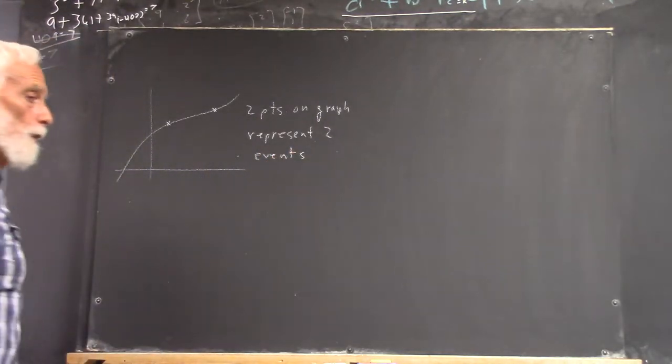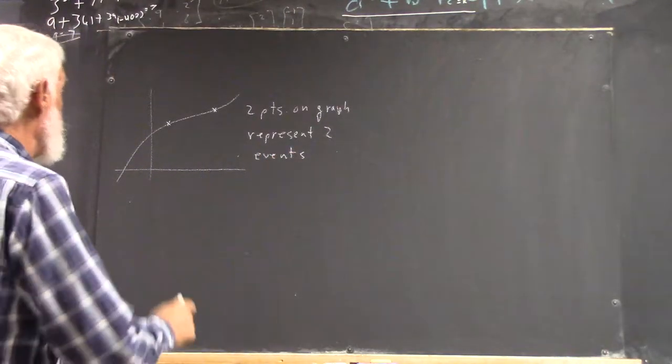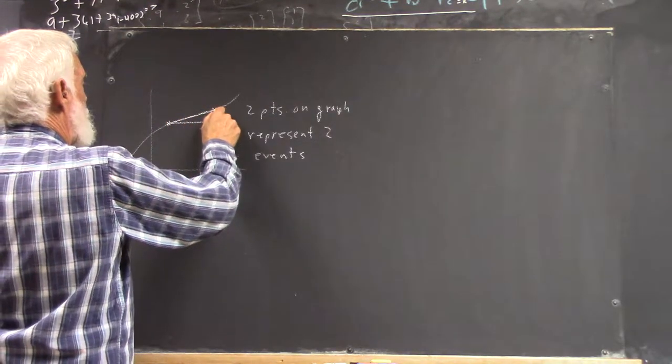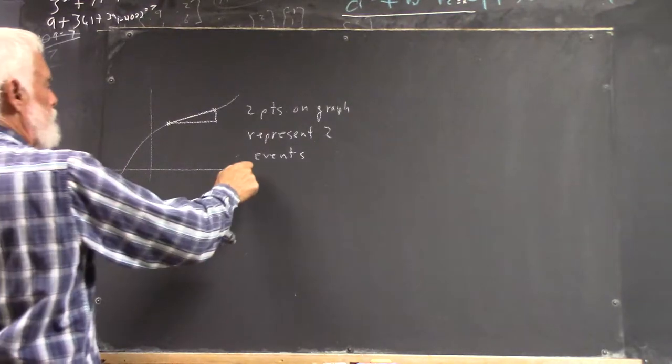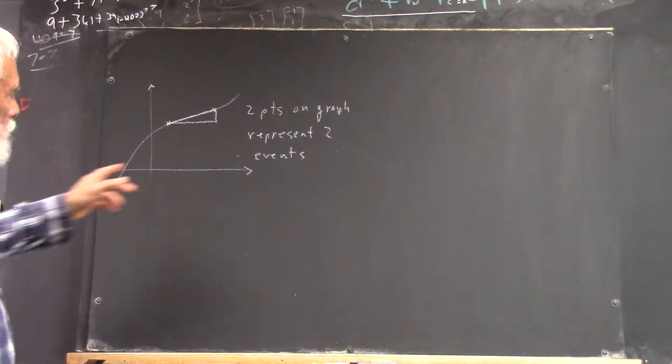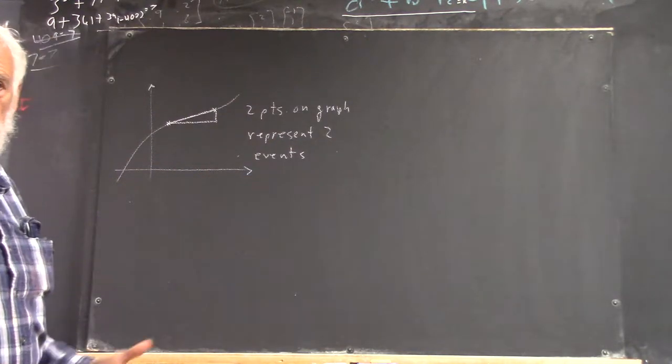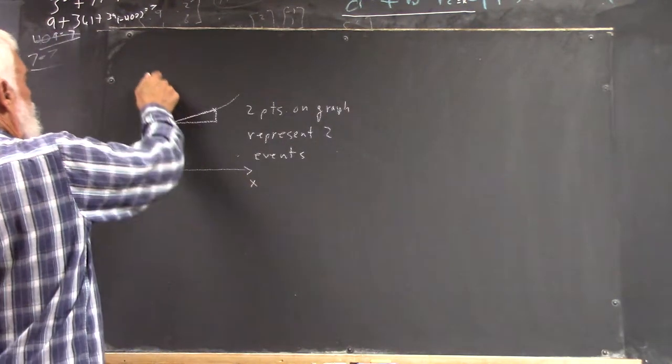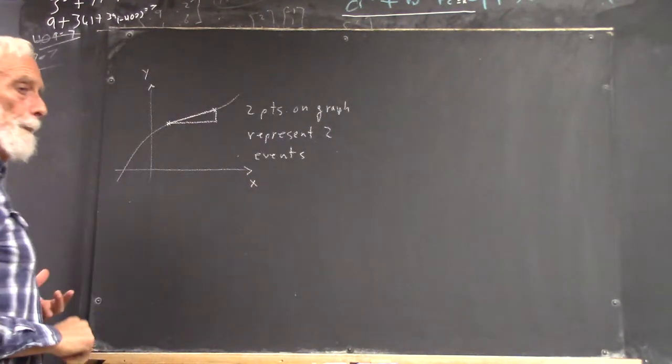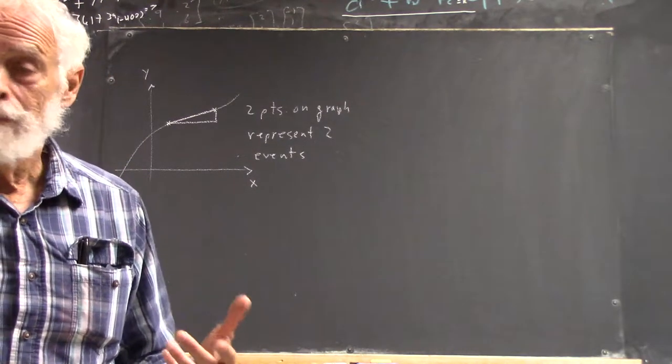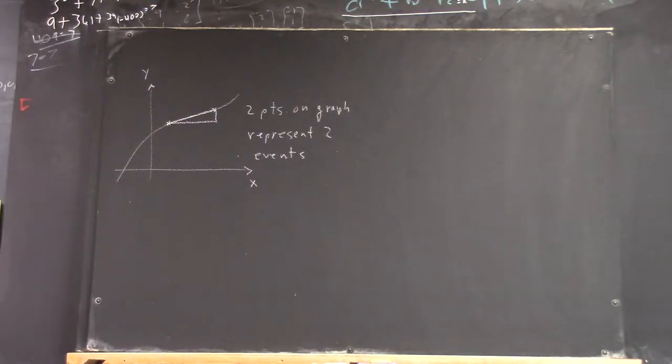Two points on the graph represent two events and the fundamental triangle. What does the run of the fundamental triangle tell you? Let's just say this is x and this is y. What does the run tell you? It's a change in the x value. Yeah, it's a change in the x value.